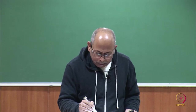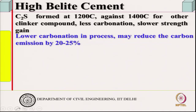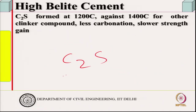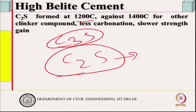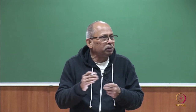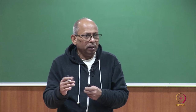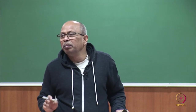High belite cement is one of these alternatives. Belite is C₂S. High belite cement is formed at 1200°C, which has been tried earlier to cut down cost. We know that C₂S strength development is slower — C₃S is the one that gives strength first. C₃S was produced at a higher temperature (about 1400°C) and has higher heat of hydration, so it reacts immediately and gives faster strength development, while C₂S reacts later.